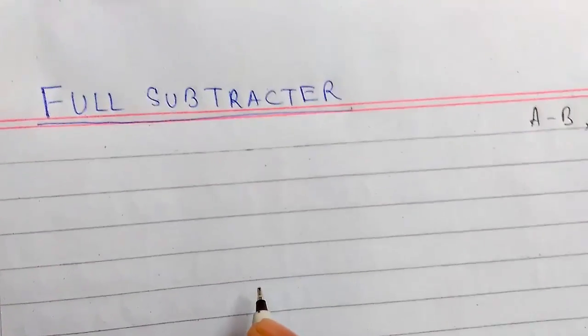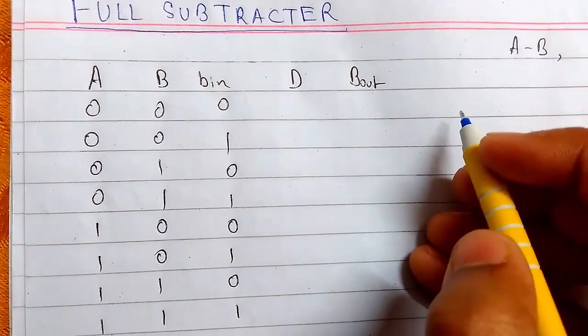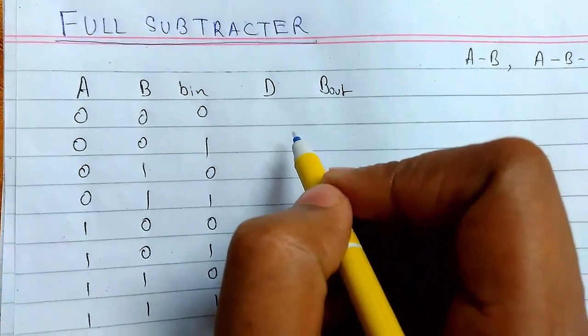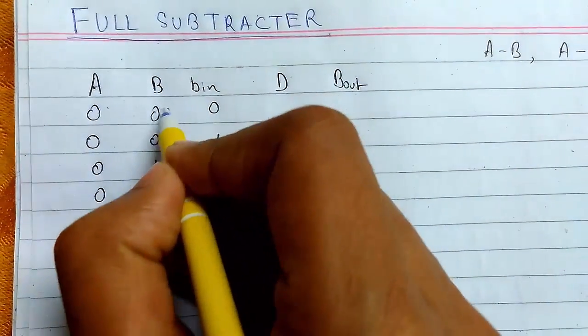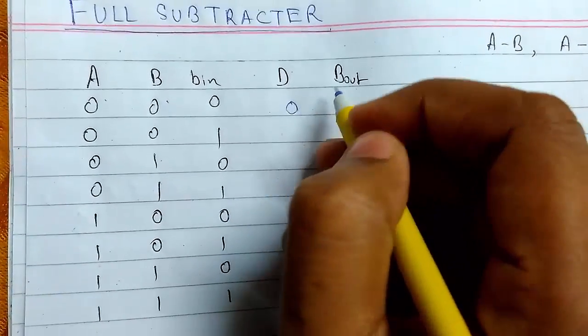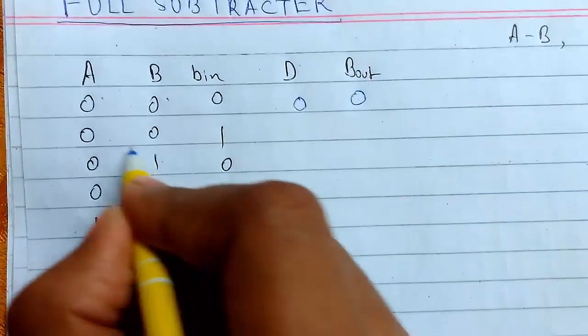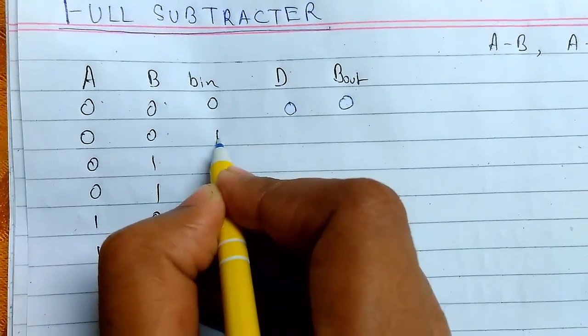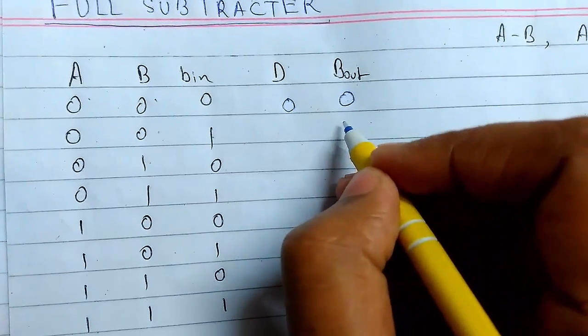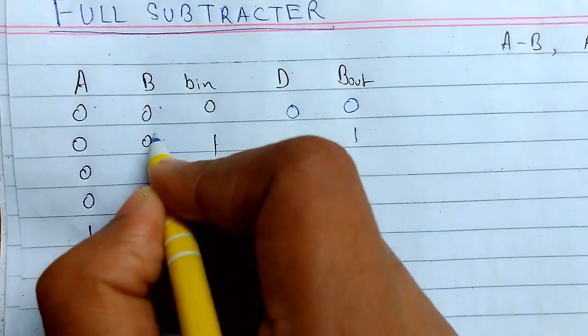So I will draw the truth table for it. This is the truth table which I have made. Now we will see the subtraction operation. 0 minus 0 and 0 minus 0 is 0. This will also be a subtraction operation. 0 minus 0, 0 minus 0, and 0 minus 1—we need to borrow, and this will be 10.